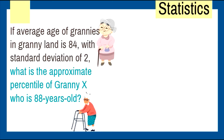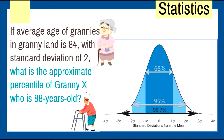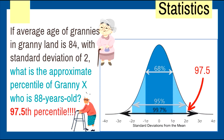If the average age of grannies in granny land is 84, with a standard deviation of 2, what is the approximate percentile of Granny X who is 88 years old? She is two standard deviations above the mean, placing her at the 97.5th percentile — older than 97.5% of the grannies.